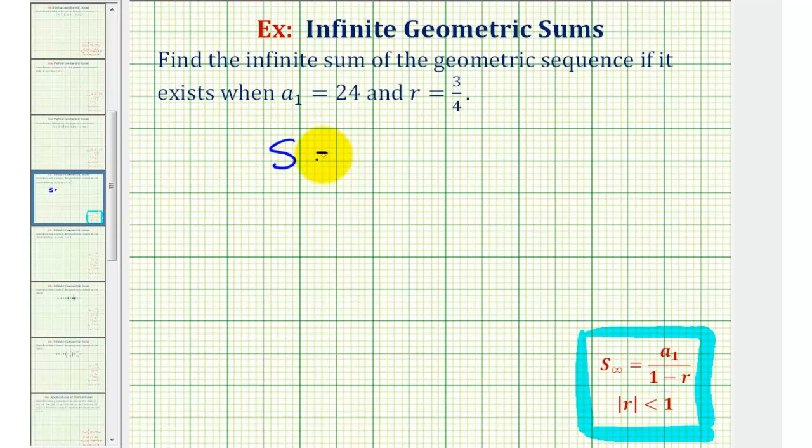The infinite sum is equal to a sub one, the first term, which is 24, divided by one minus r, or one minus three-fourths.